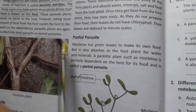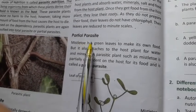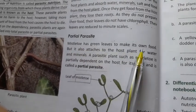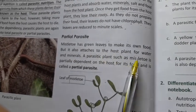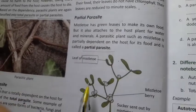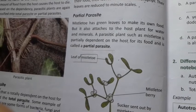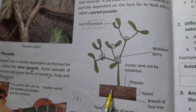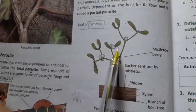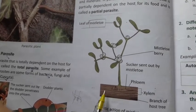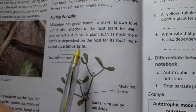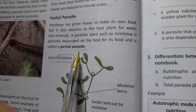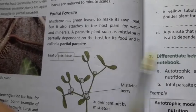The second type of parasite is the partial parasite. A partial parasite has green leaves and can make some of its own food, but it also attaches to the host plant to obtain water and minerals. So it partially depends on the host for its nutrition. Such plants are called partial parasites.